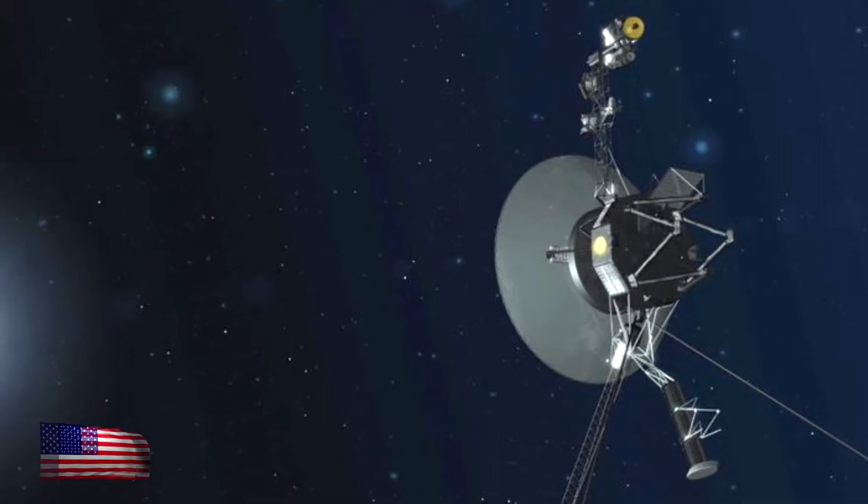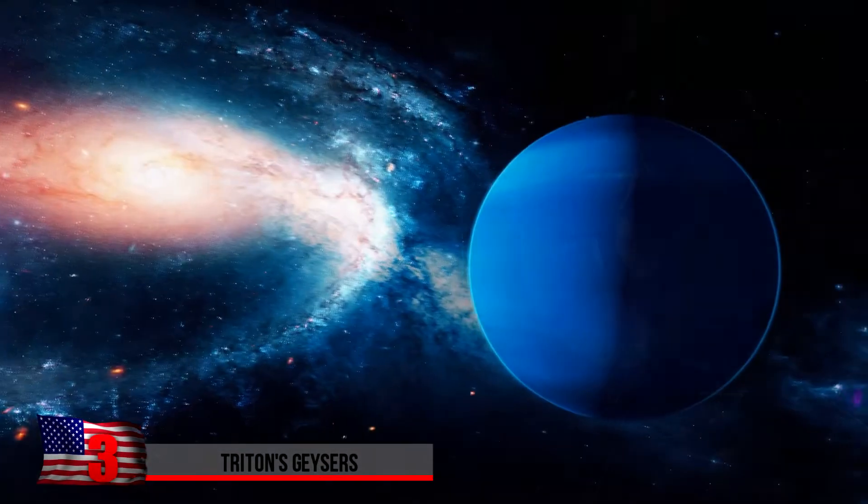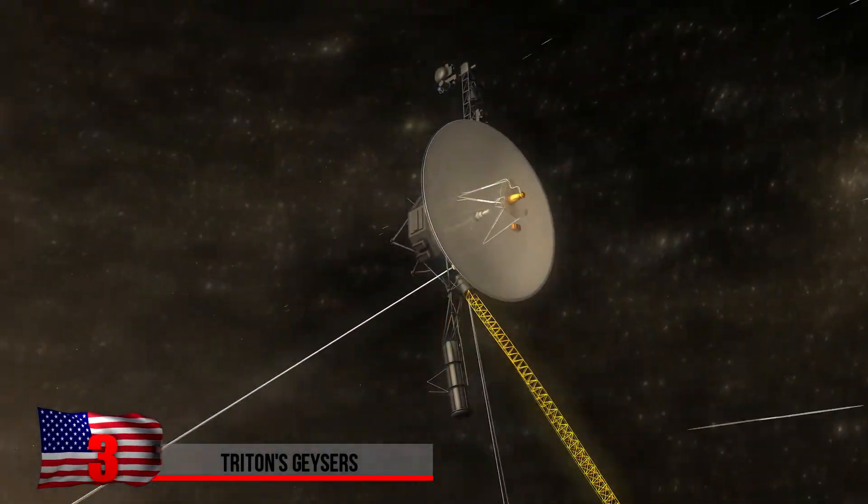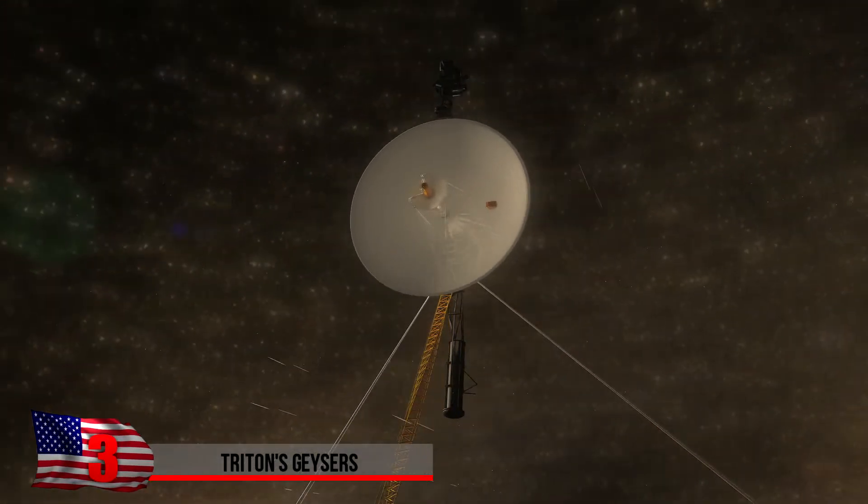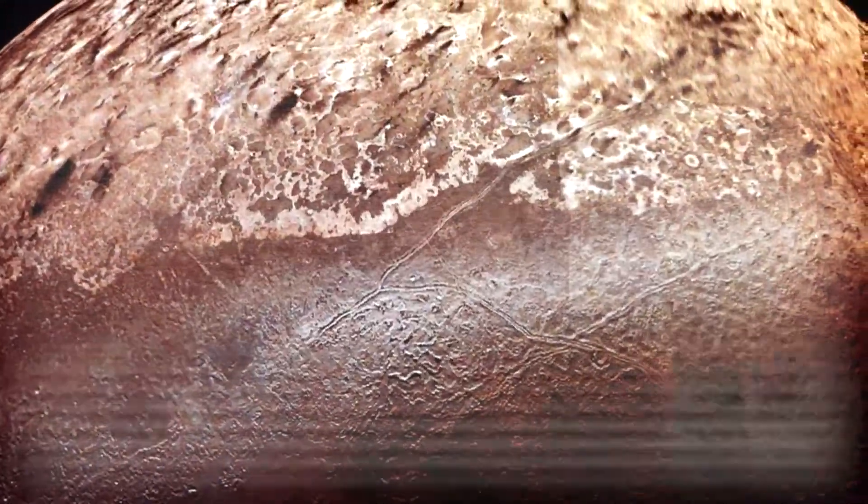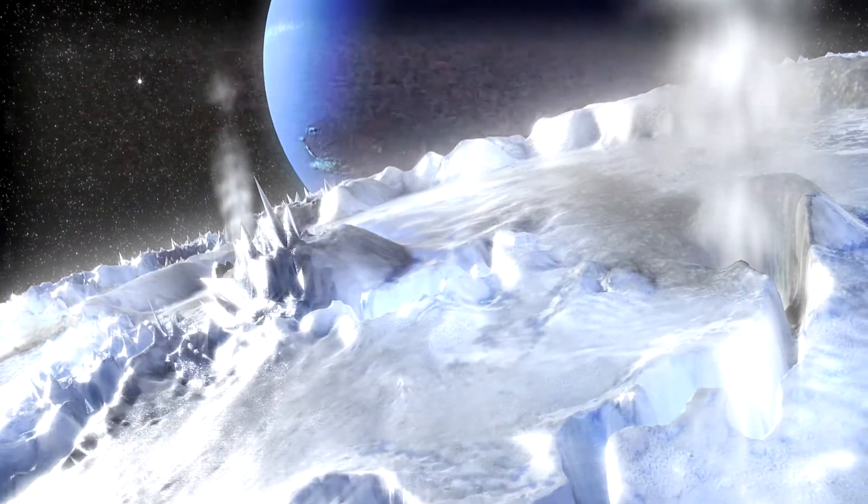Triton's Geysers. During Voyager 2's last flyby around Neptune before it headed on its way out of the solar system, the probe discovered that Io wasn't the only erupting moon in the galaxy. Triton, the blue planet's largest moon, had geysers blooming to its surface.